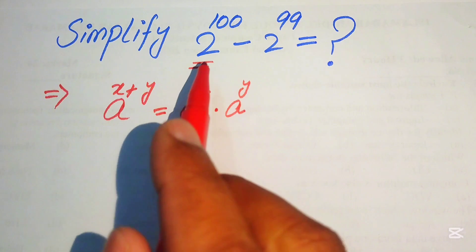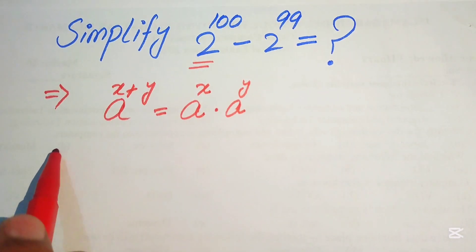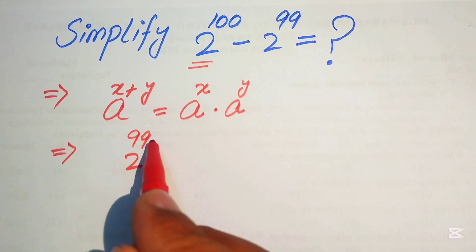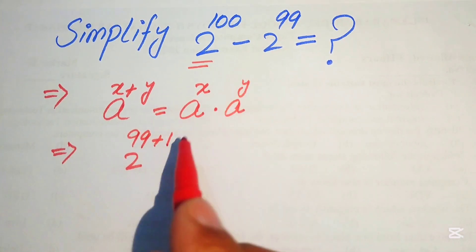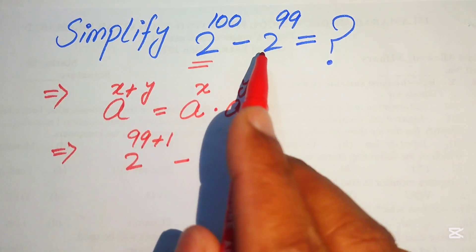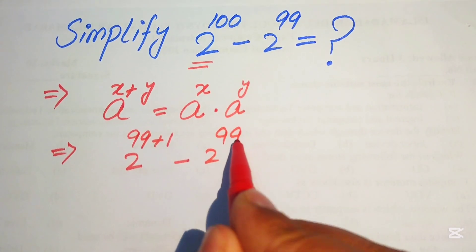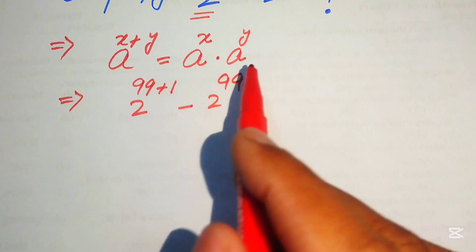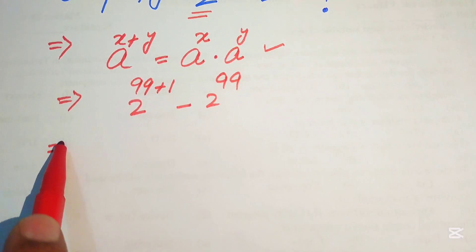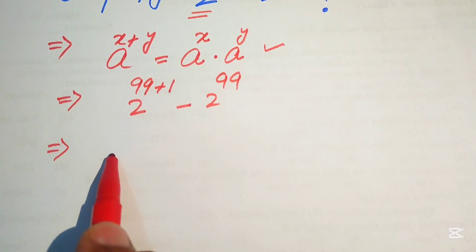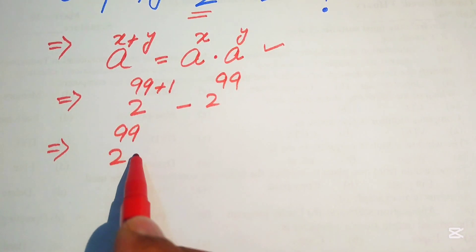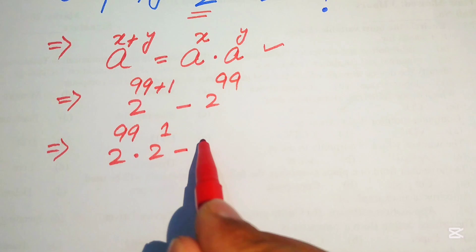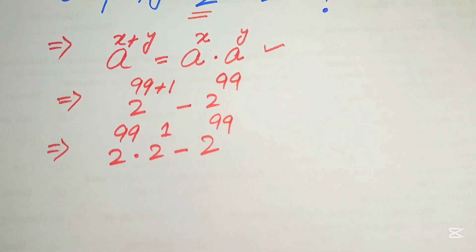We focus on 2 to the power of 100 and write it as 2 to the power of 99 plus 1, minus 2 to the power of 99. According to this rule, we break the exponent and write it as 2 to the power of 99 multiplied by 2 to the power of 1, minus 2 to the power of 99.